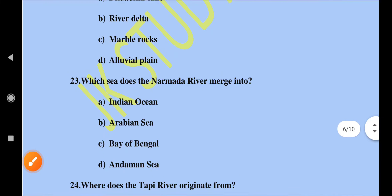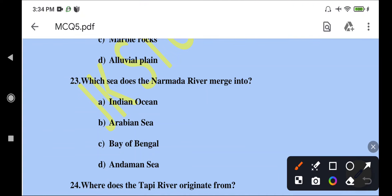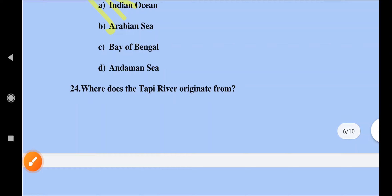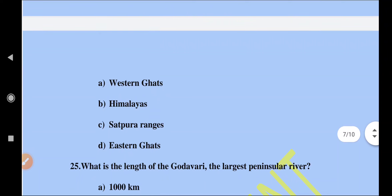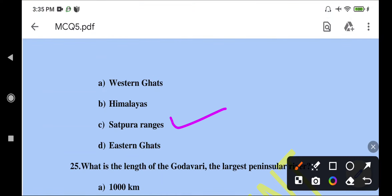Which sea does the Narmada River merge into? The Narmada River goes into the Arabian Sea. Where does the Tapi River originate from? The Tapi River originates from the Satpura Range in central India.